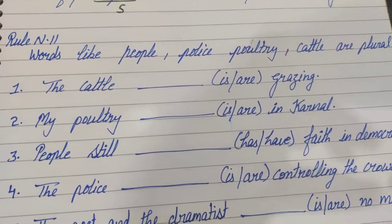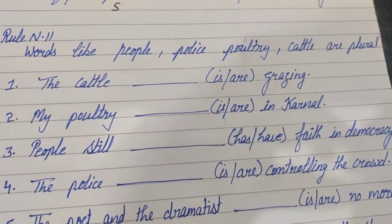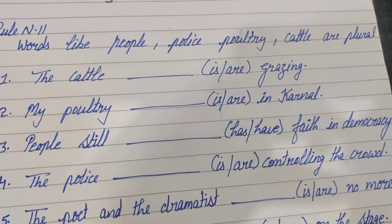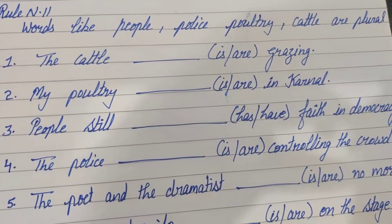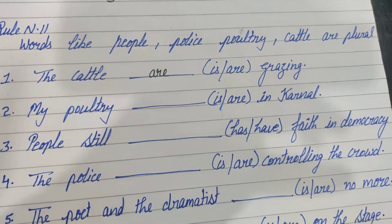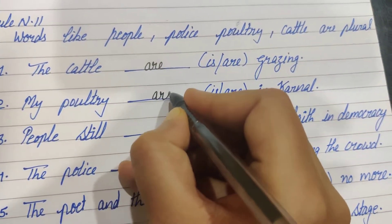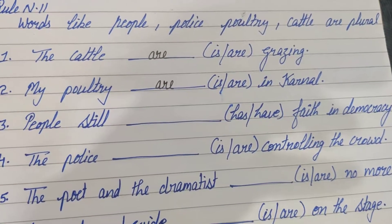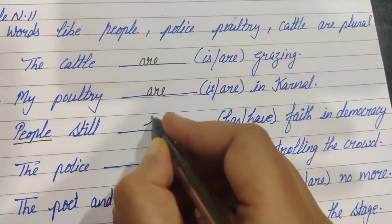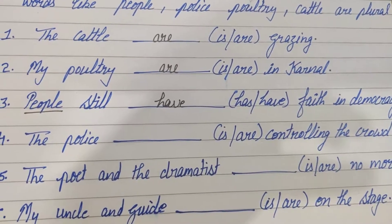Rule number 11: Words like 'people', 'police', 'poultry', and 'cattle' are always plural. For example: The cattle are grazing. My poultry are in the kennel. People still have faith in democracy. The police are controlling the crowd.